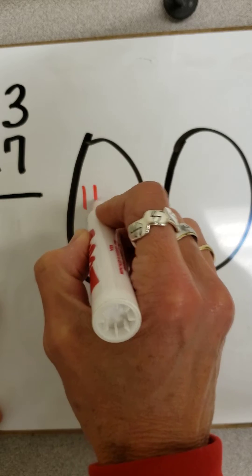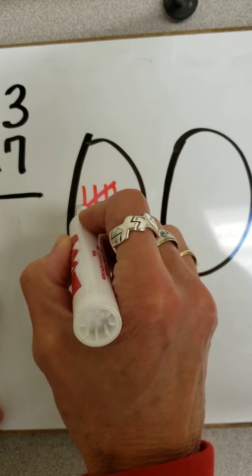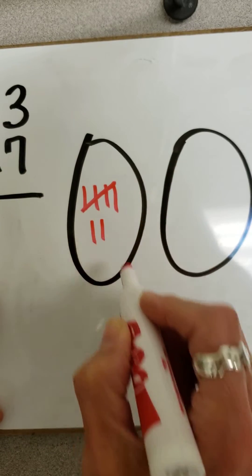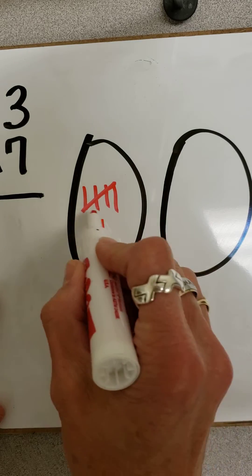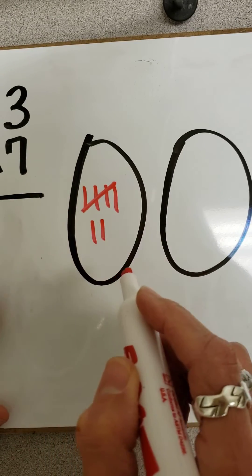So I have 1, 2, 3, 4, 5, 6, 7. I like to group my 5's in a group like this so I can count them easier.